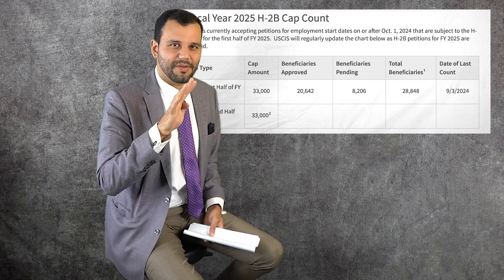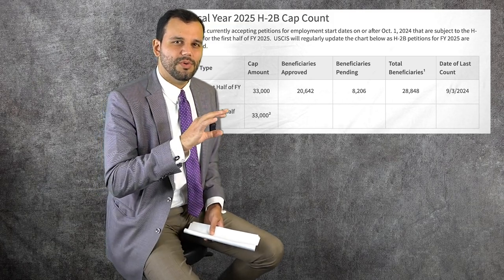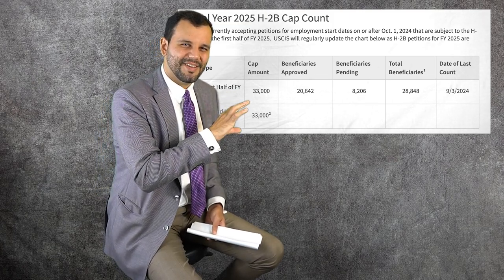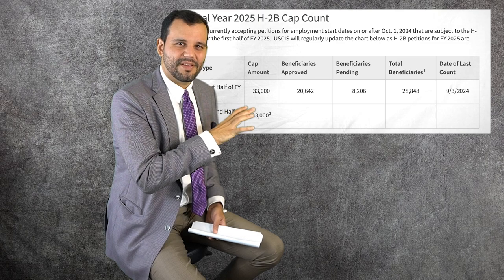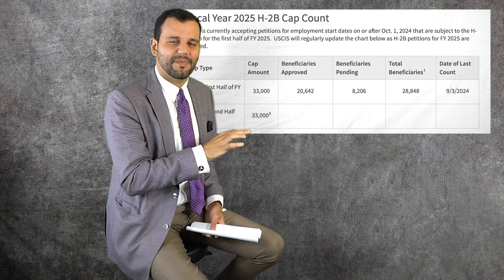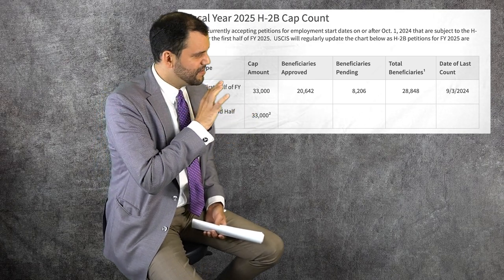There's usually a float of about 4,000 visas, a float. So you can kind of look at this number and say, okay, there's about eight and a half thousand visas left for this program for this year.